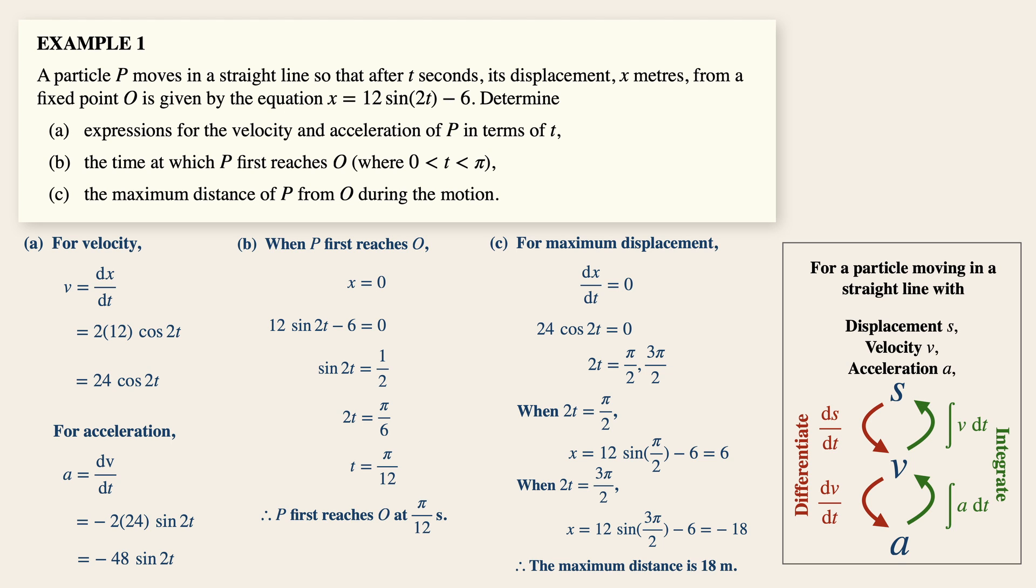You can ignore the minus sign because when we deal with displacement, it has a direction component to it. Now this particle happens to be traveling in the opposite direction. So we just want to have the absolute value, which is 18.